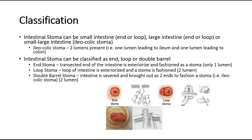Intestinal stoma can be small intestine, end or loop; large intestine, end or loop; or small-large intestine, like ileocolic stoma, in which two lumens are present. Intestinal stoma can also be classified as end, loop, or double barrel.